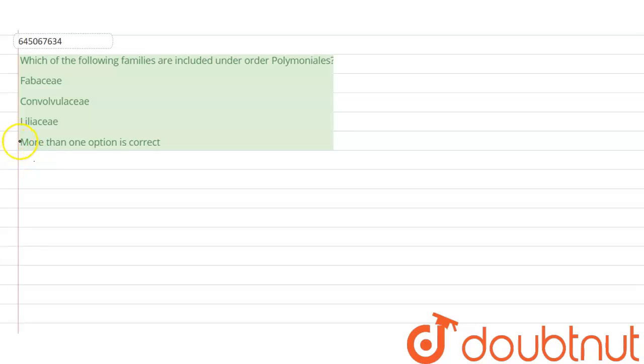Which of the following families are included under order Polymoniales? We have to tell the families that are included under the order Polymoniales. Option one: Fabaceae. Option two: Convolvulaceae. Option C: Liliaceae. Option D: More than one option is correct.